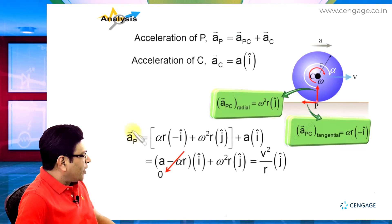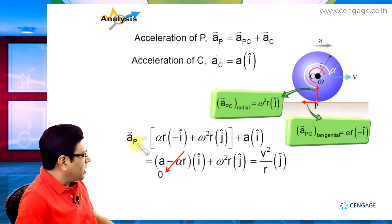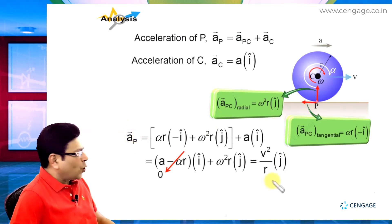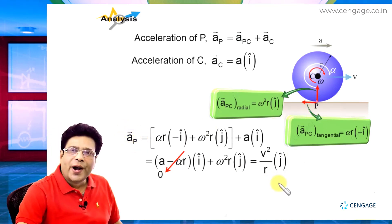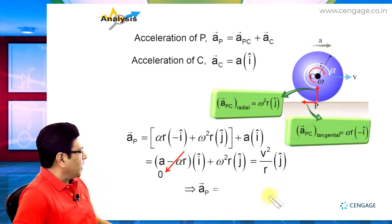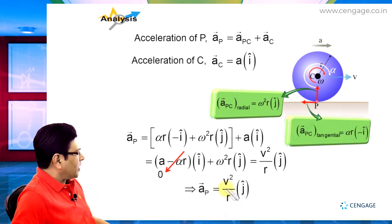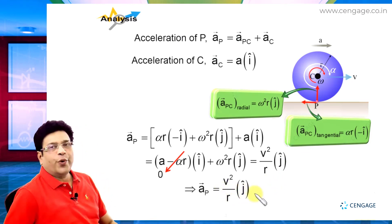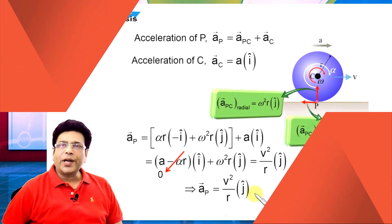That means we can write the acceleration of P — the lowest point — as v squared divided by r, in the j-cap direction. This represents the acceleration of the lowest point of the rolling disk.